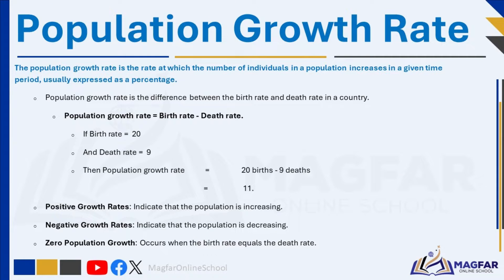The population growth rate is the rate at which the number of individuals in a population increases over a given time period, typically expressed as a percentage. It is calculated by subtracting the death rate from the birth rate. For instance, if a country has a birth rate of 20 and a death rate of 9, the difference of 11 per 1,000 people represents the natural increase in population. Positive growth rates mean the population is increasing, negative rates indicate a decrease, and zero population growth occurs when the birth rate equals the death rate.